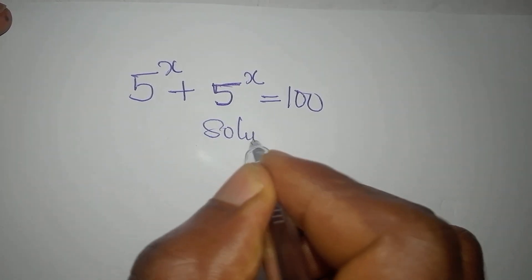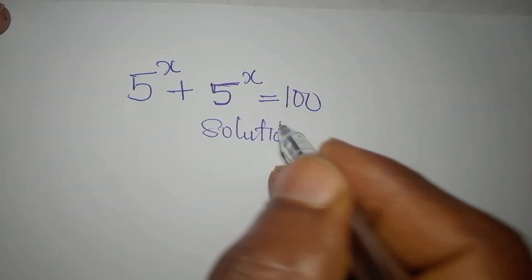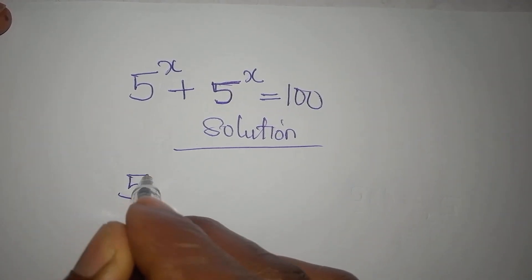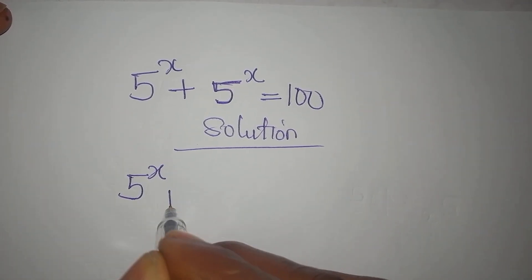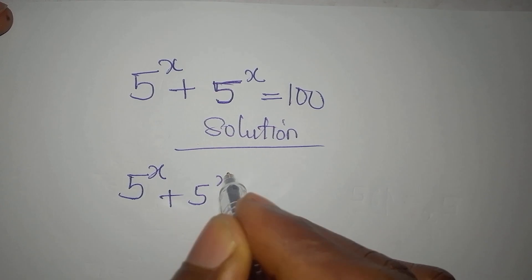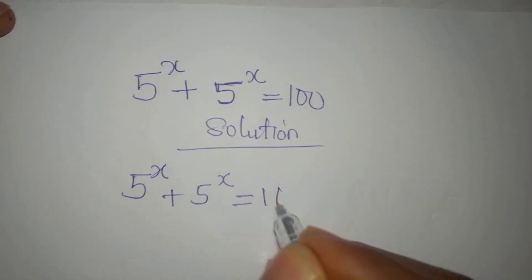Hi everyone, let's provide the solution to this problem: 5 to the power of x plus 5 to the power of x equals 100.